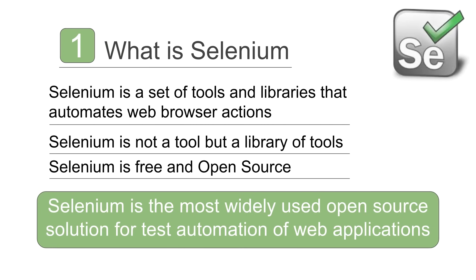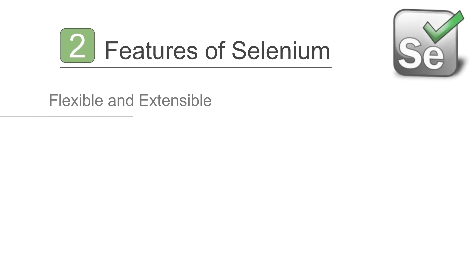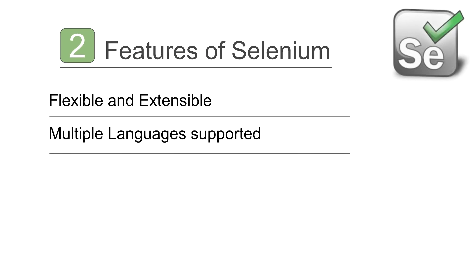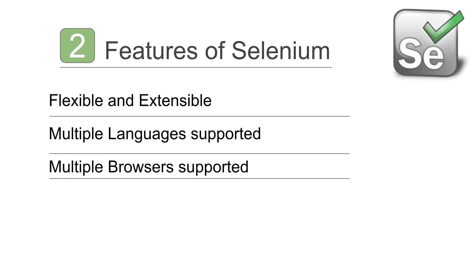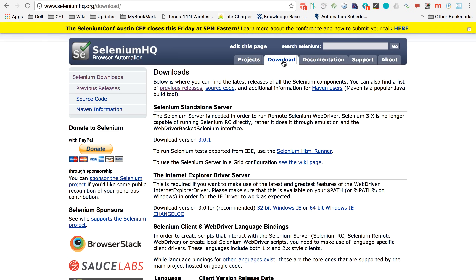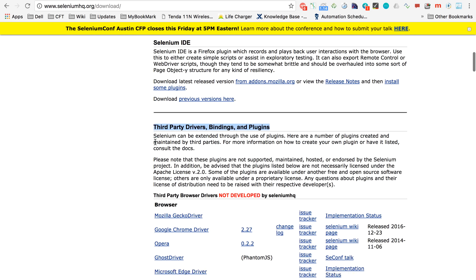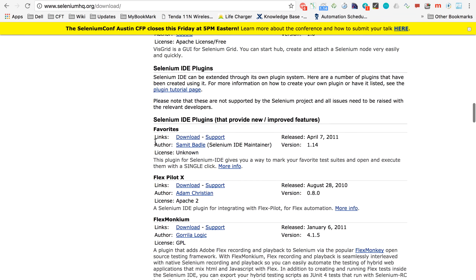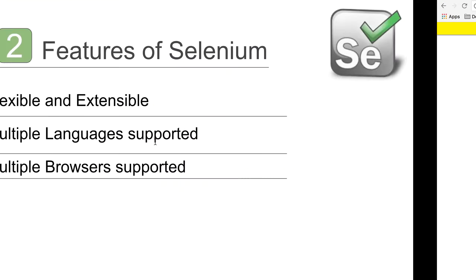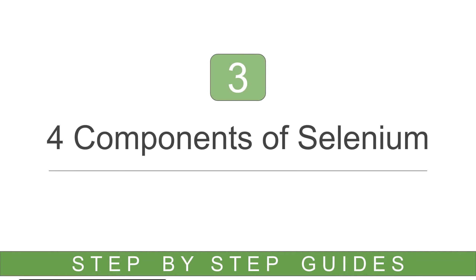Selenium is free and open source and is the most widely used solution for automation of web applications. Its features include being flexible and extensible, with support for multiple languages and browsers. If you go to the Selenium site and navigate to the download page, you will find a lot of third-party plugins and add-ons available, so you can extend Selenium and get a lot of additional functionalities.